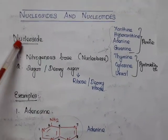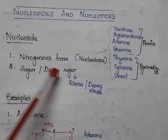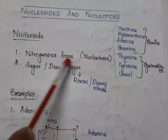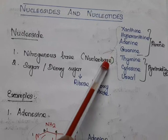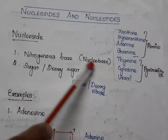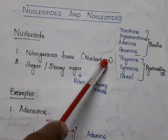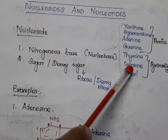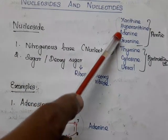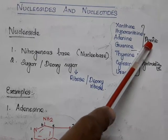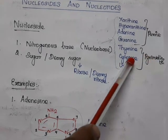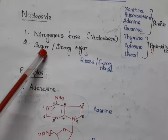What are nucleosides? A nucleoside has two parts: one is a nitrogenous base and another is a sugar or deoxy sugar. The nitrogenous base is otherwise called a nucleobase. Because of the presence of nitrogen in the structure and because it is present in the nucleus, it is called a nucleobase. Examples are adenine, guanine, thymine, cytosine, uracil, xanthine, or hypoxanthine. Xanthine, hypoxanthine, adenine, and guanine have a purine structure — they are called purine bases. The remaining three have a pyrimidine structure — they are called pyrimidine bases.